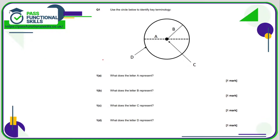Question 1 — we don't need a calculator though, nice and easy. What does letter A represent? Well, it's the line from one side of the circle to the other that cuts through the centre — that is a diameter.